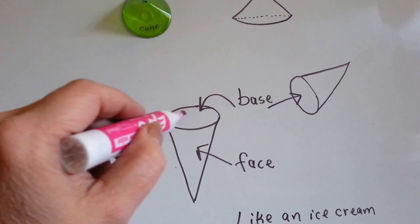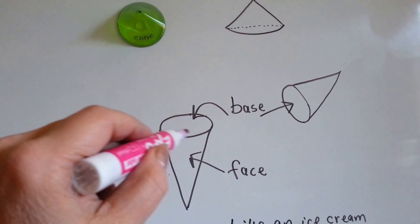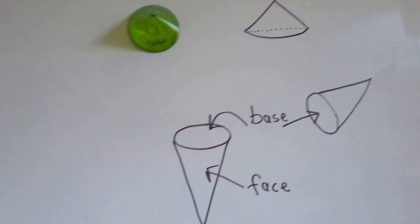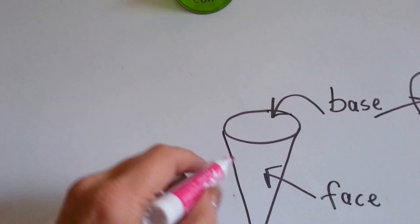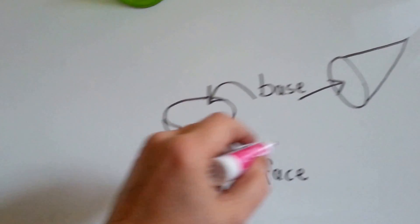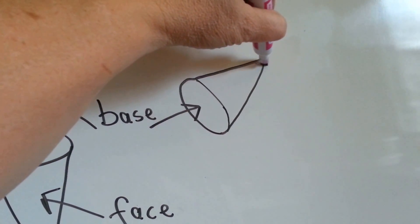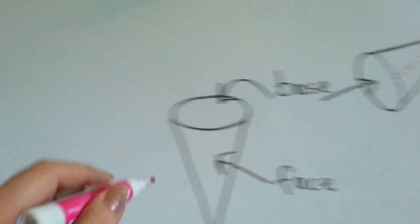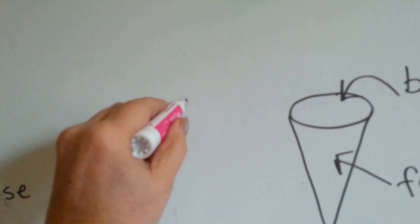So, that's the face. This round, flat part is called the base. And if you were to put a cut along the side here, if you were to cut this open, it would be shaped like this.